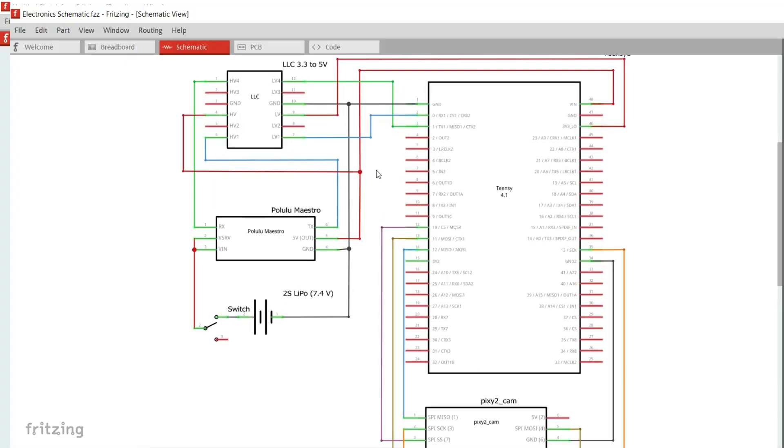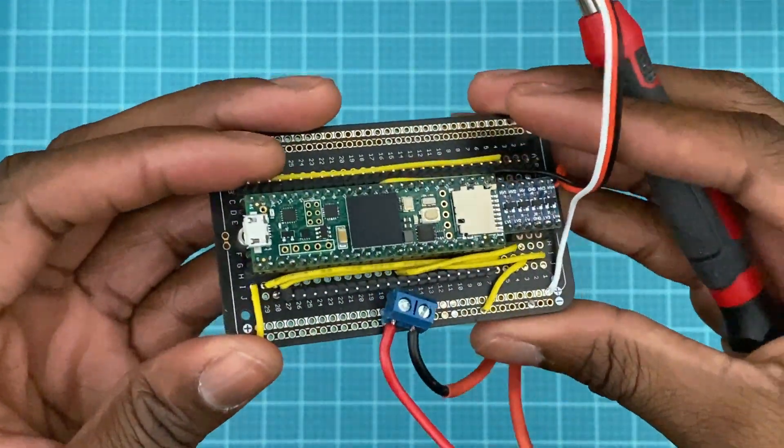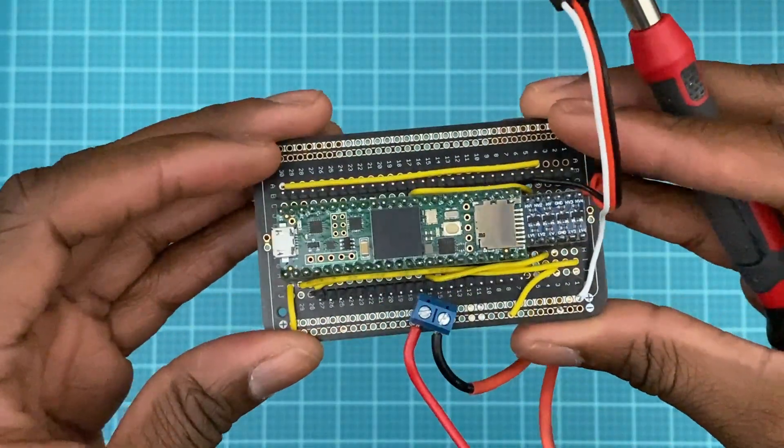Next I created a full schematic of the circuit and then created the circuit on a half protoboard. After that it was time to build the robot.